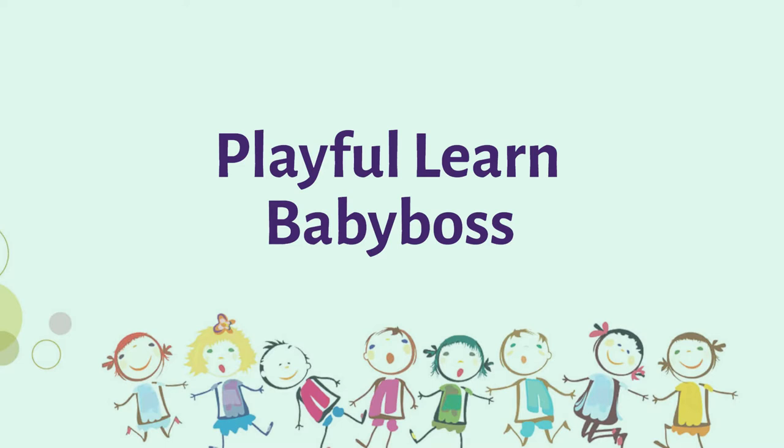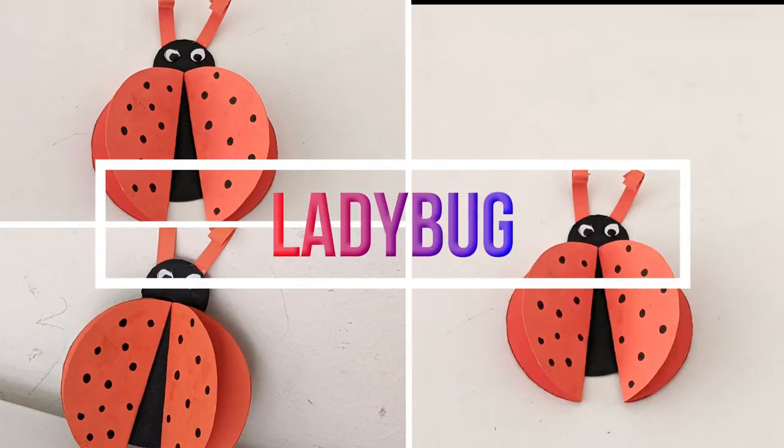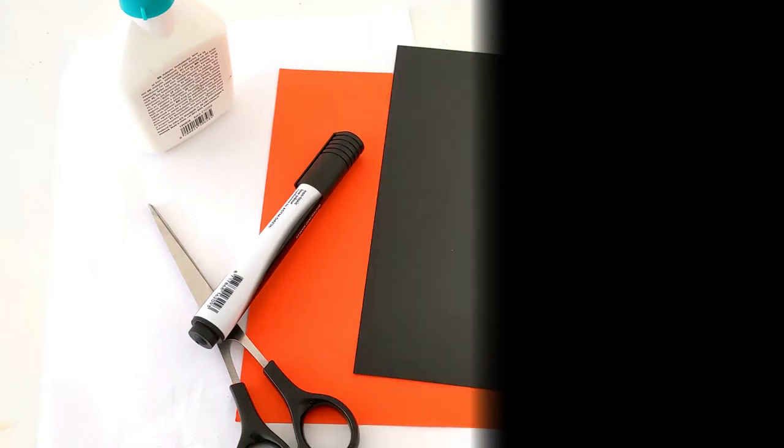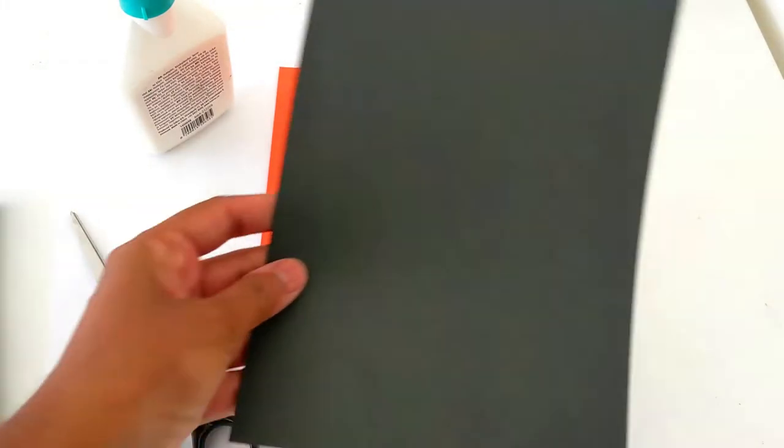Hi kids, welcome to Playful and Baby Boss. Today we are going to learn how to make a ladybug with paper. Let's see what items we need: one orange, one black paper, scissors, and glue. That's it.